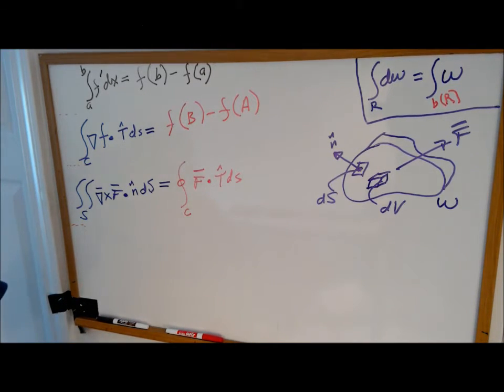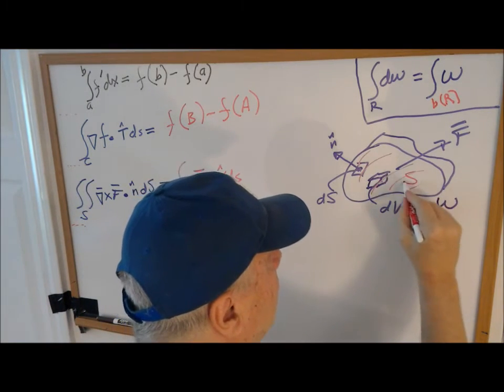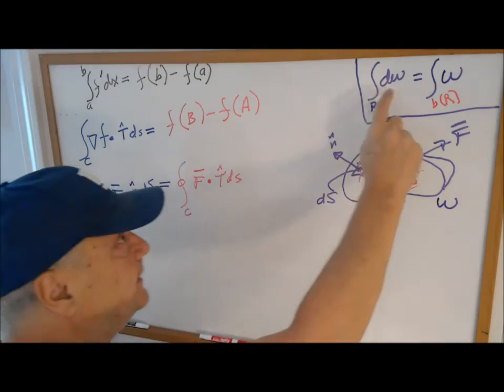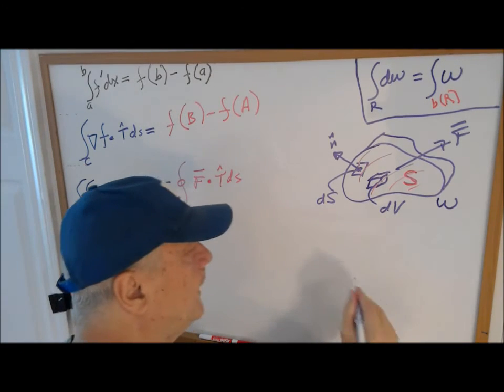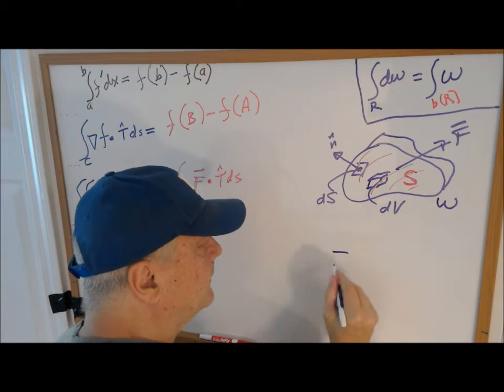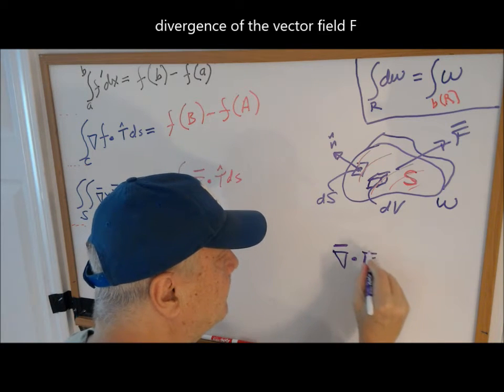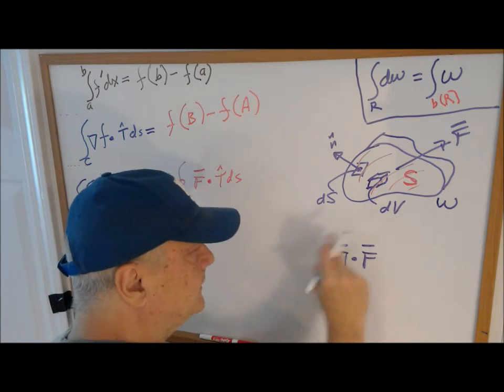And we need a boundary. Well, it's a solid, and it's bounded by the surface. So the boundary is the surface S. And we're done, except we need the differential. So in this case, the differential is the divergence, del dot F, and it's a scalar. This is a scalar.